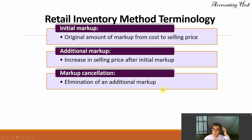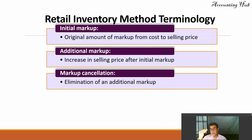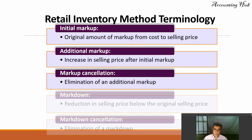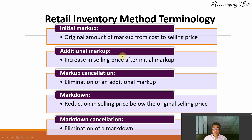We have some terminology we need here. Initial markup is the difference between original prices and costs. Additional markup is an additional increase in selling price, which may have a markup cancellation if the additional markup goes down. After the initial markup, we can reduce the selling price — that is a markdown — and if we eliminate it, we have a markdown cancellation.